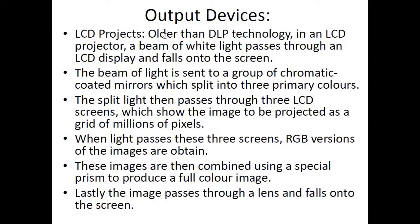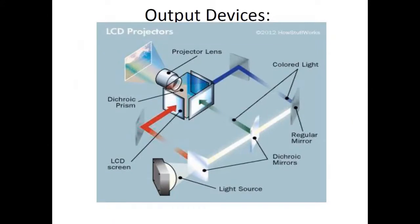Next we have LCD projectors, which are older than DLP technology. In an LCD projector, a beam of white light passes through an LCD display and falls onto the screen. The beam of light is sent to a group of chromatic light-coated mirrors which split it into three primary colors. The split light then passes through three LCD screens which show the image to be projected as a grid of millions of pixels. When light passes through these three screens, RGB versions of the image are obtained. These images are then combined using a special prism to produce a full color image, and lastly the image passes through a lens and falls onto the screen.